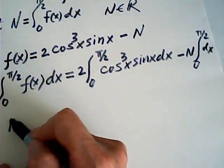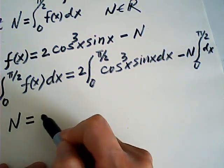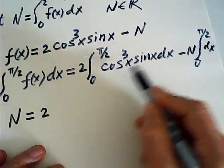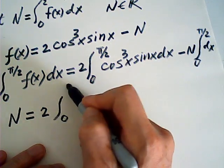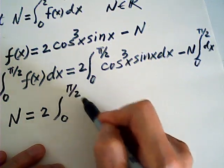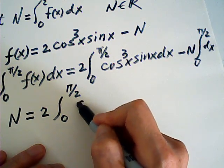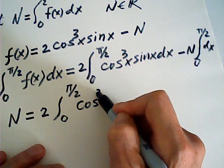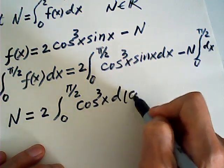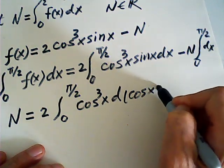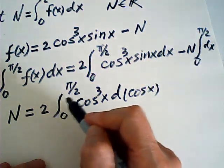Because this is also equal to N. N is equal to 2. Now for this integral, it's a lot easier. This is from 0 to half pi, cosine cubed x d of cosine x, right?